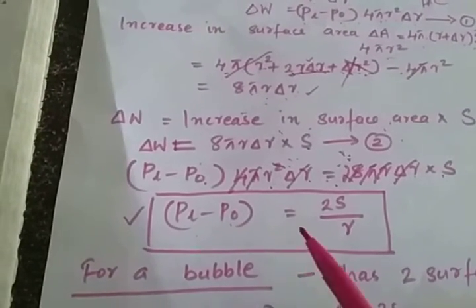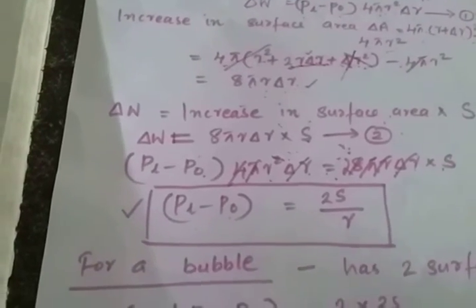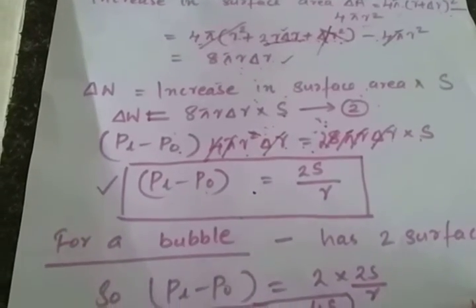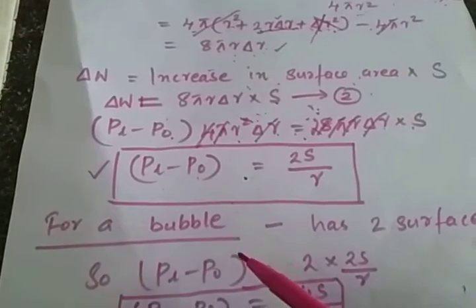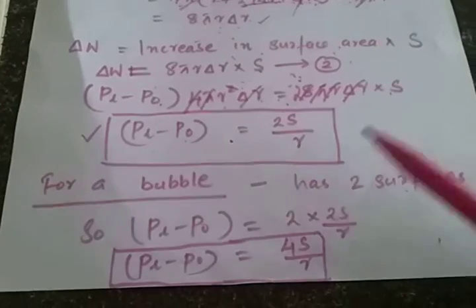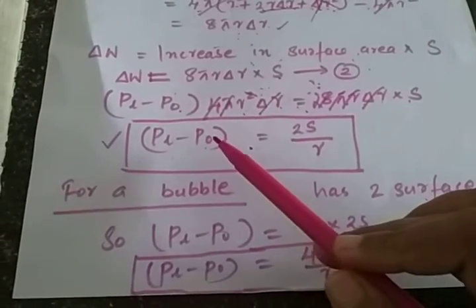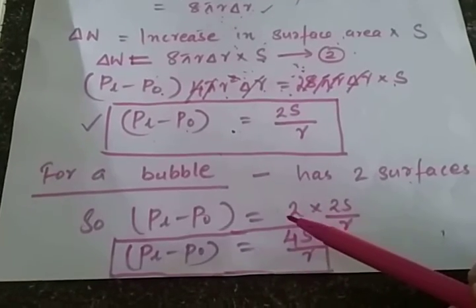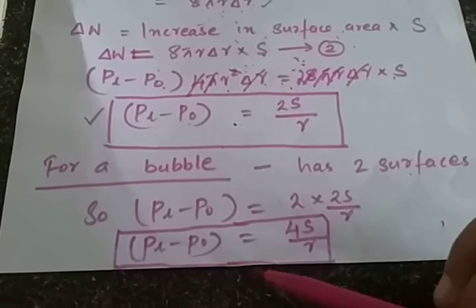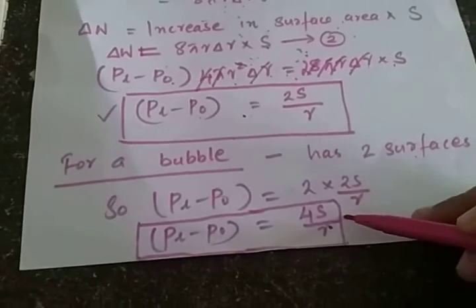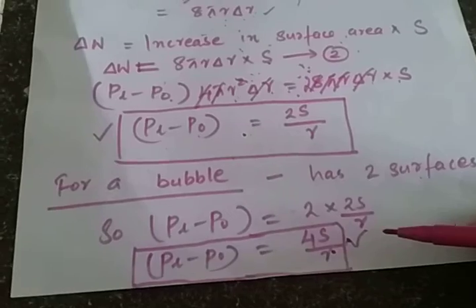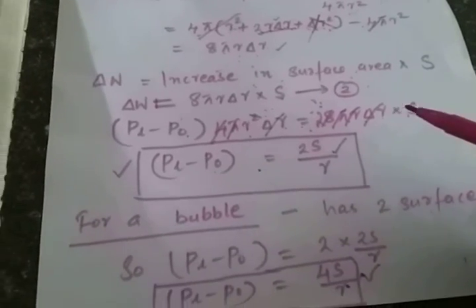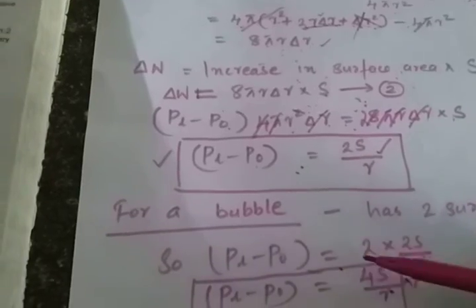This excess pressure inside the liquid drop is responsible for the expansion of that liquid drop. This is the pressure difference for a drop. We can also find out the pressure difference for a bubble. A bubble has two surfaces, so just multiply the expression by 2. You will get Pi − Po = 2 × 2S/R, that is Pi − Po = 4S/R. So 4S/R is the expression for pressure difference for a bubble, and 2S/R is the expression for pressure difference for a liquid drop.